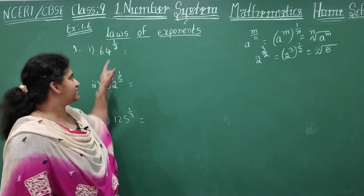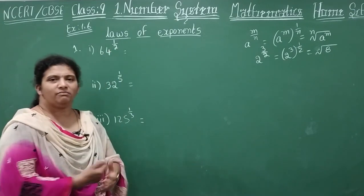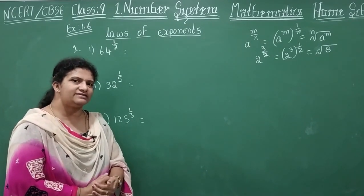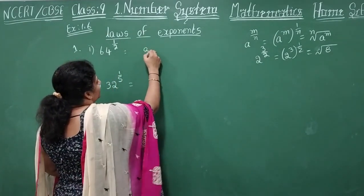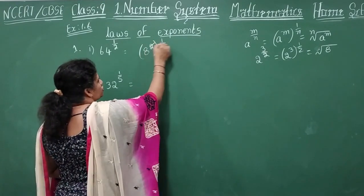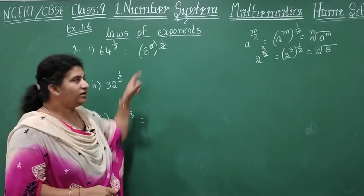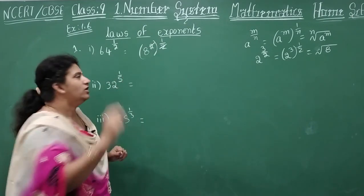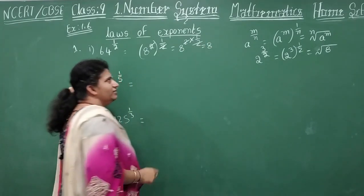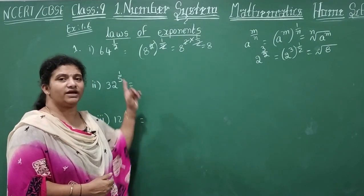Now let's start Exercise 1.6. First, find 64 power 1 by 2. 64 is a perfect square: 8 times 8 is 64. So write it as 8 square whole power 1 by 2, and by Law 2 — A power P whole power Q equals A power PQ — you get 8 power 2 into 1 by 2, and the 2s cancel, giving answer 8. Second: 32 power 1 by 5. Since 2 multiplied 5 times gives 32, write 2 power 5 whole power 1 by 5 — 5 and 5 cancel, answer is 2. Third: 125 power 1 by 3. Since 5 multiplied 3 times gives 125, write 5 power 3 whole power 1 by 3 — answer is 5.